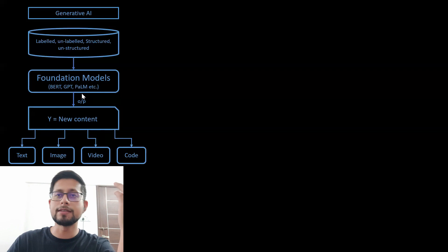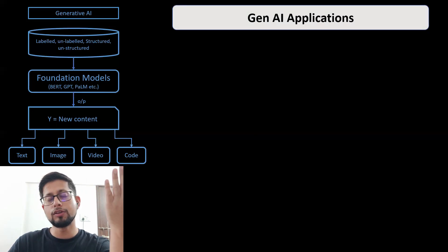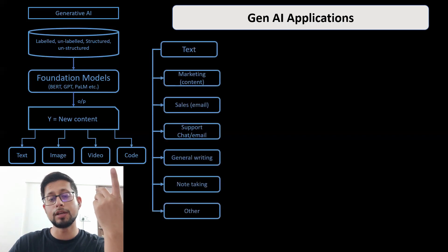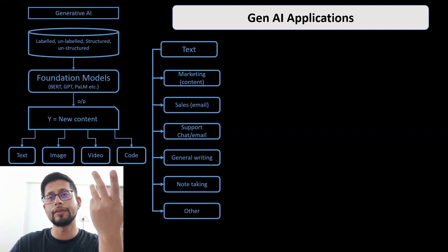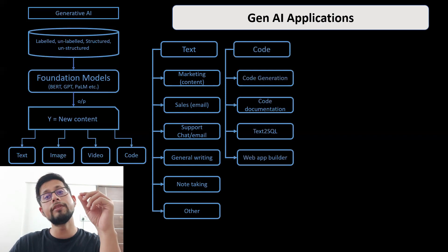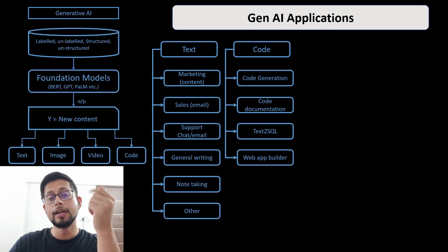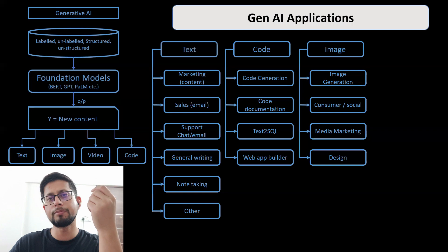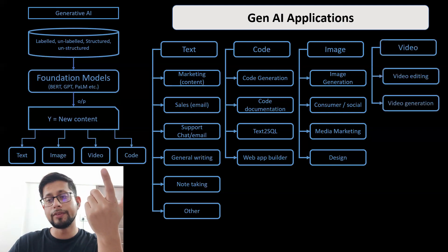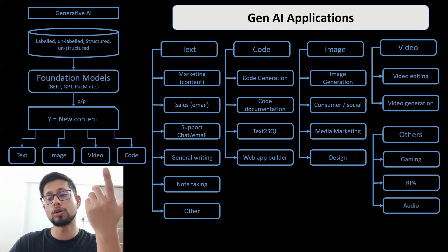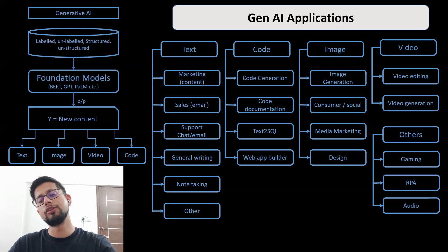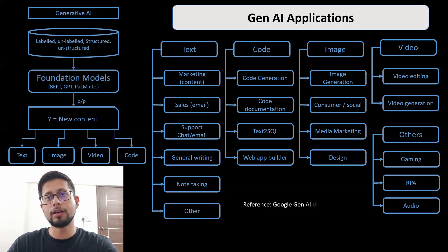Now let's look at different applications of generative AI. For text: marketing content, emails, support chat, general writing, blogging, and note-taking. For code generation: writing code, explaining code, code documentation, and technical documentation. For images: image generation, consumer and social media images, marketing design, and banner design. For video: editing and generating new video. Other applications include gaming, robotic process automation, and audio generation.